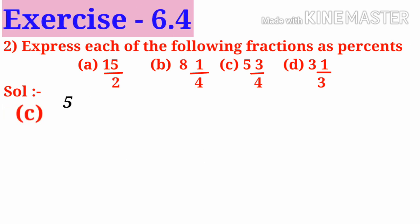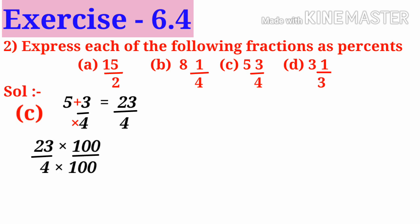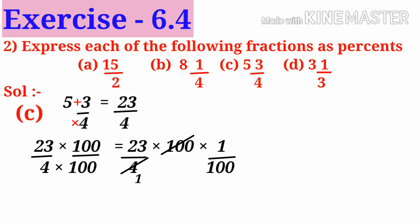C: 5 and 3 by 4. Convert it into an improper fraction: 5 times 4 is 20 plus 3, giving 23 by 4. Now multiply both numerator and denominator by 100, that is 23 by 4 into 100 into 1 by 100. On simplification by 4, 23 into 25 is equal to 575. Since 1 by 100 is denoted by percent, the answer is 575 percent.